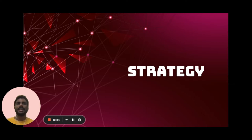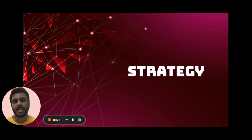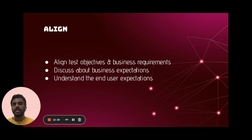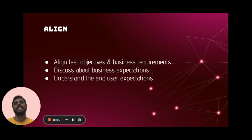In order to build a performance-centric culture, we need to set a proper strategy first — otherwise it's like building something without a proper foundation. When it comes to building a strategy, the first thing is to align. We need to align the test objectives with our business requirements in terms of performance expectations. We need to discuss with our stakeholders on their expectations, because they may be expecting millions of transactions for a specific feature while we are only testing with one or two users, which is not good enough.